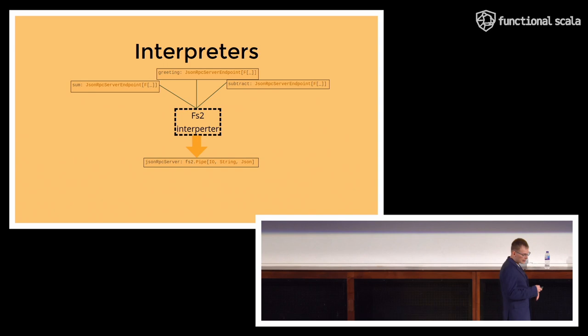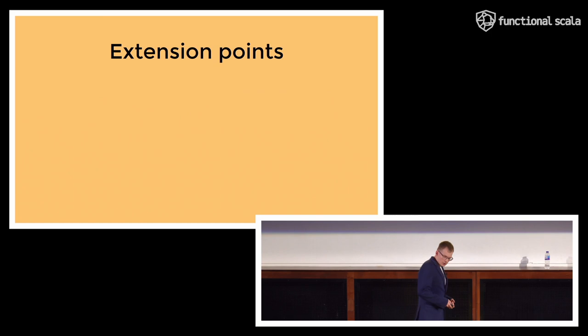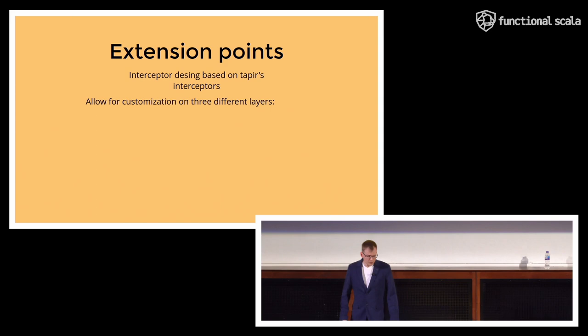However, JSON-RPC protocol is transport agnostic. So we can use FS2 interpreter and convert it into FS2 pipe. And this abstract pipe can be later attached to some socket. For example, Unix domain socket or a web socket. And in particular, this web socket can be a web socket written with Tapir endpoints. We can also customize Armadillo in multiple different ways using interceptors.